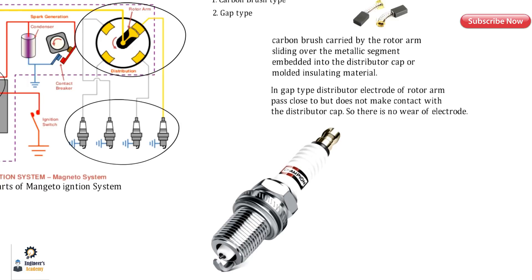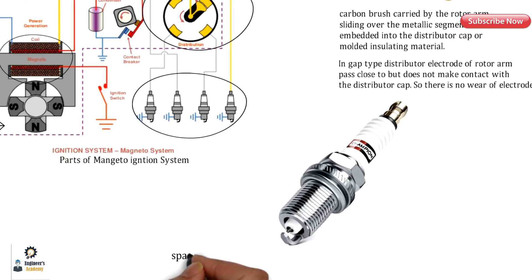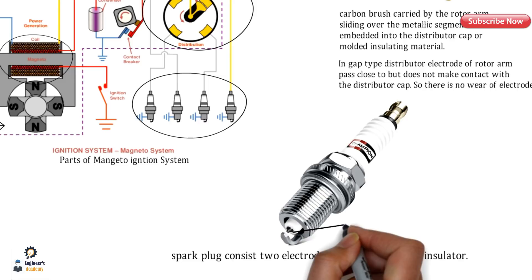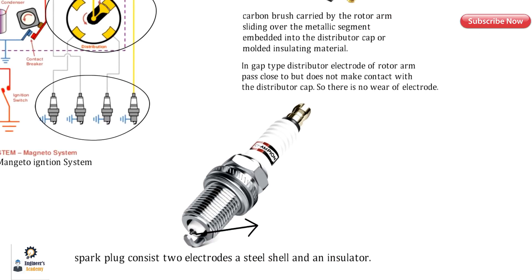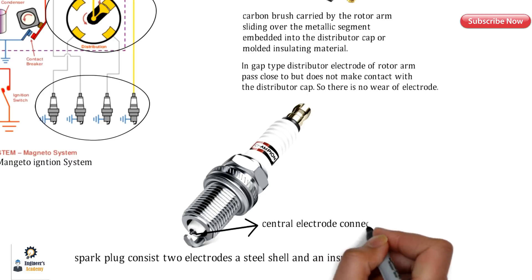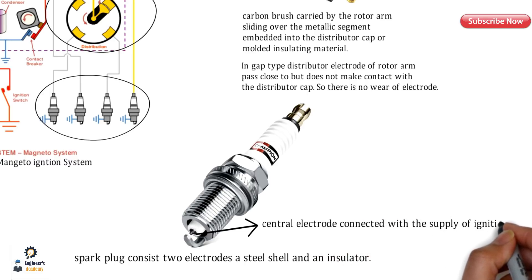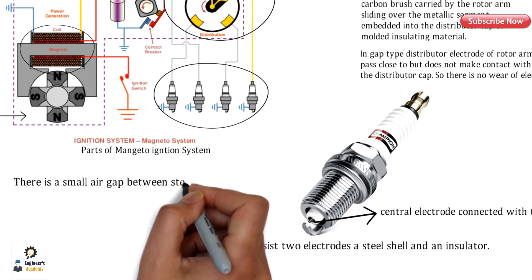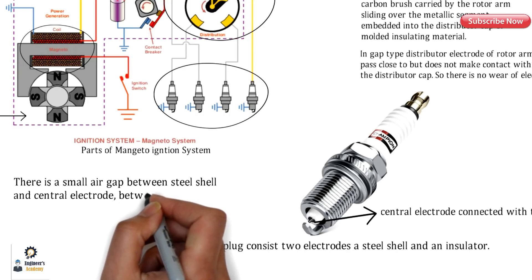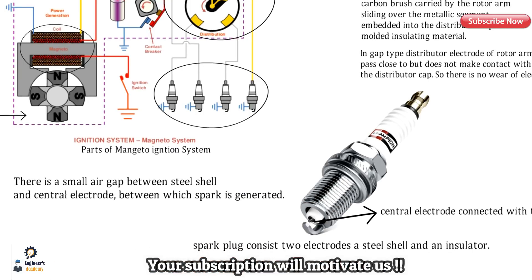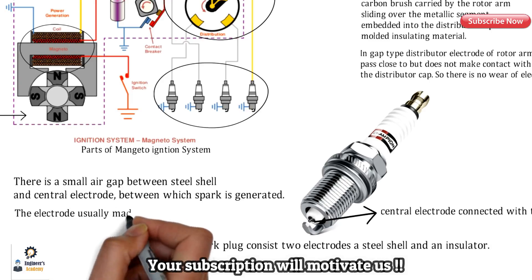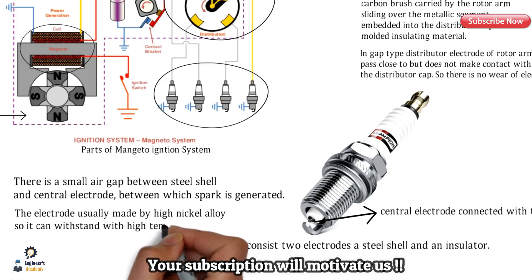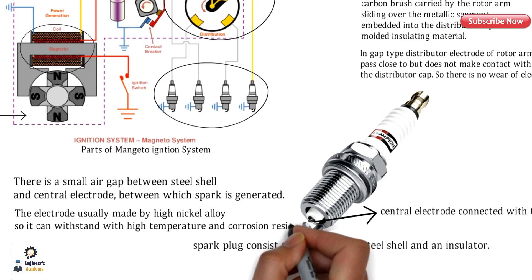The next part is the spark plug. The spark plug consists of two electrodes, a steel shell, and an insulator. The central electrode is connected to the supply of the ignition coil, and insulation is provided around it. There is a small air gap between the steel shell and the center electrode across which the spark is generated. The electrodes are usually made of a high nickel alloy so they can withstand high temperatures and offer corrosion resistance.